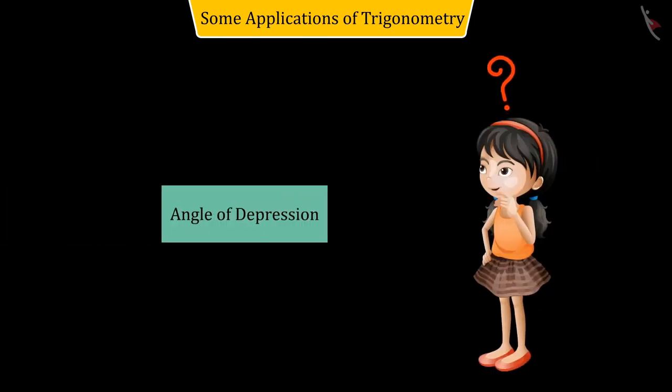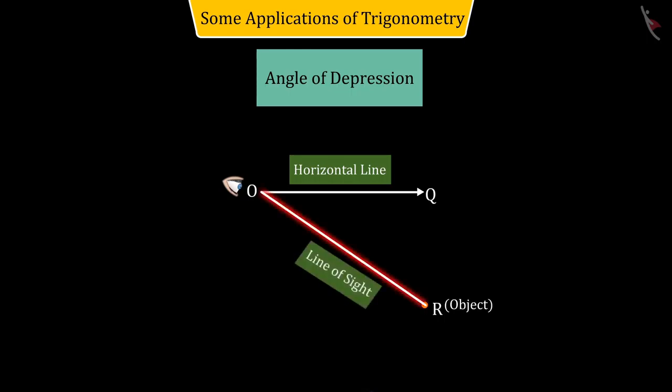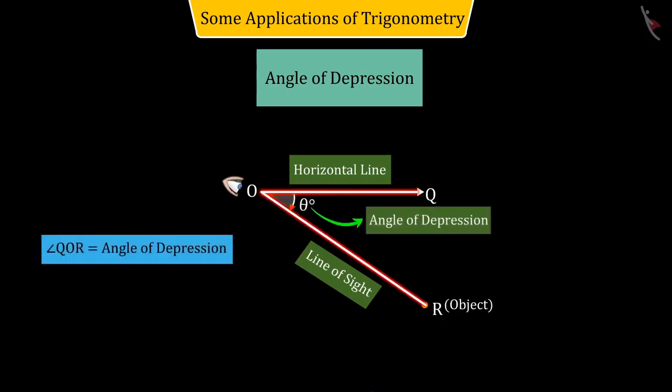So, now, can you tell what is the angle of depression? Absolutely correct. If an object lies below the horizontal line passing through the person's eye, then the angle QOR formed between the line of sight OR and the horizontal line OQ is called the angle of depression.